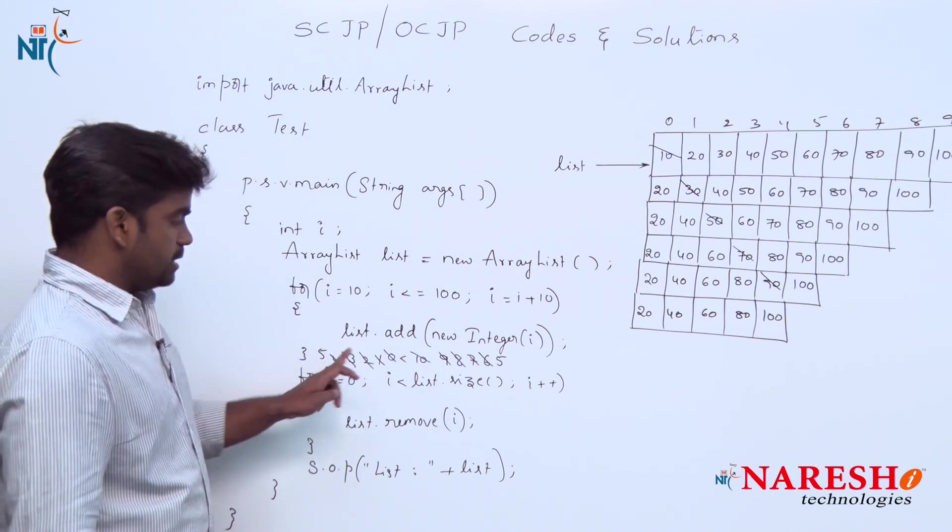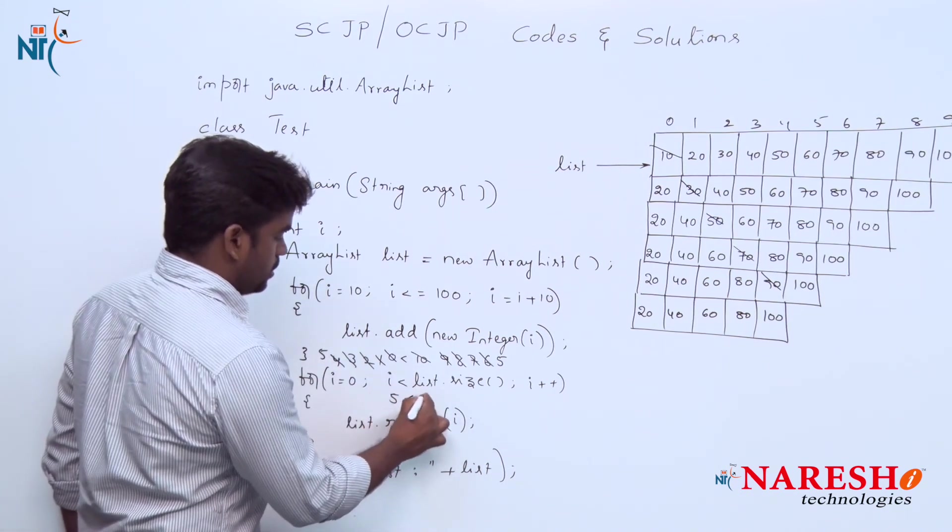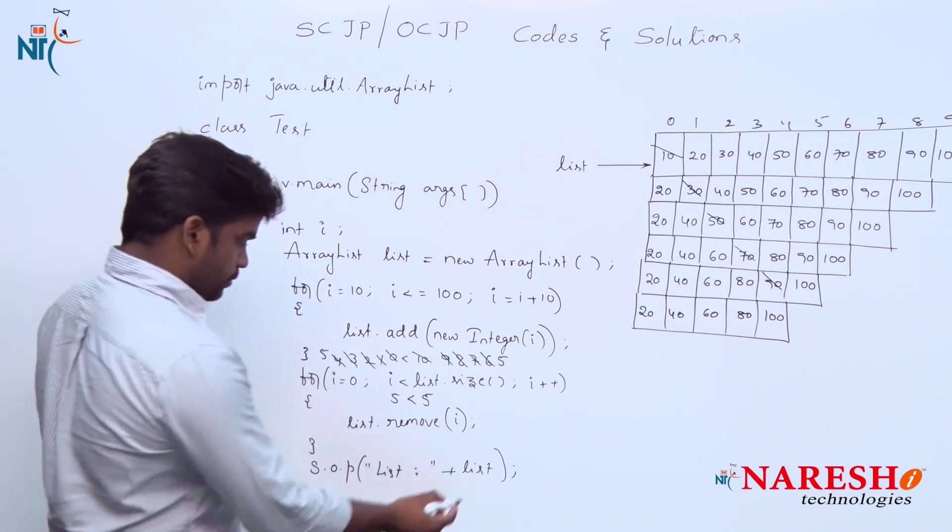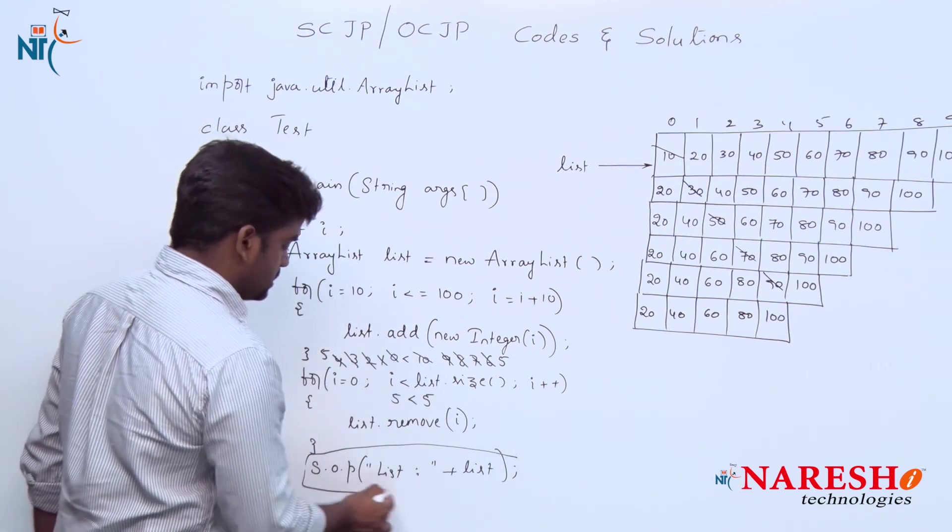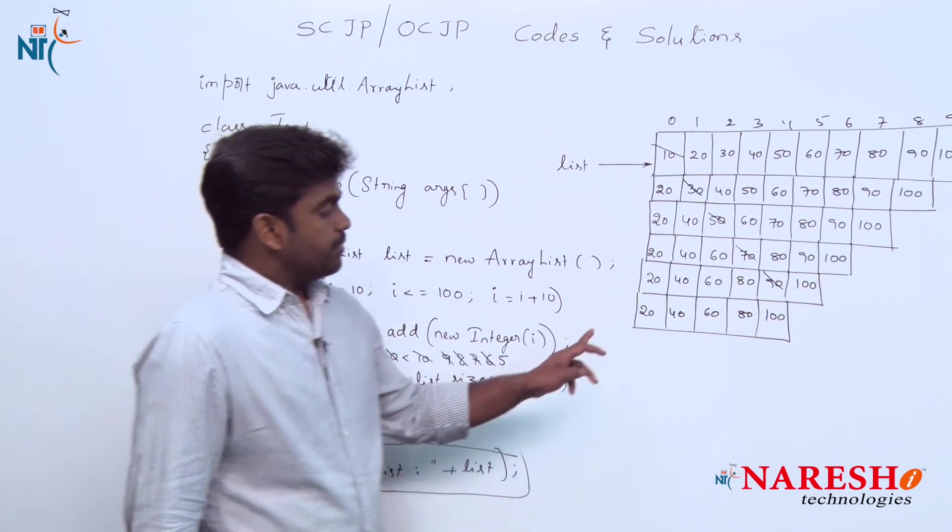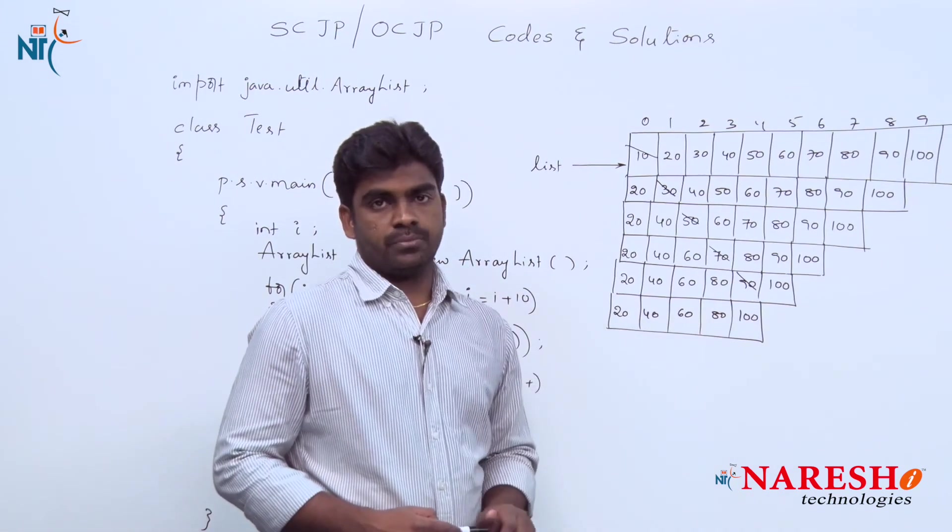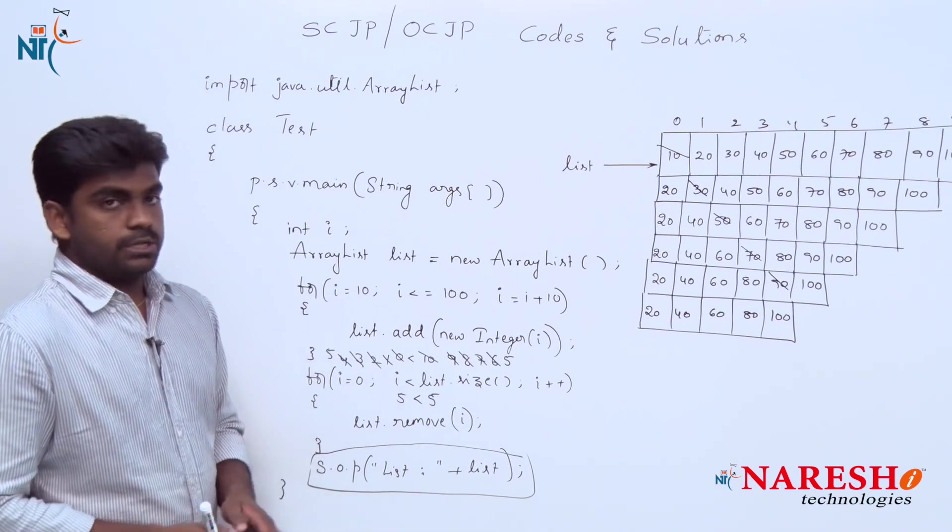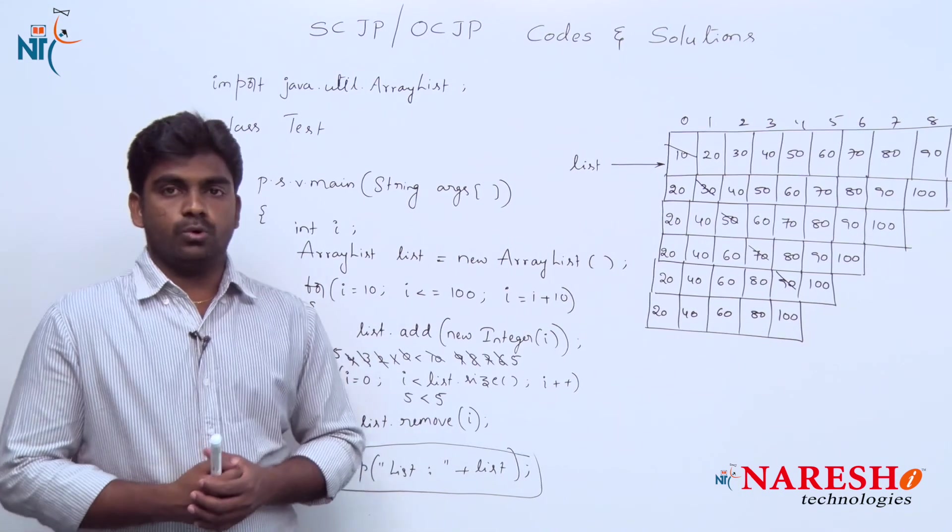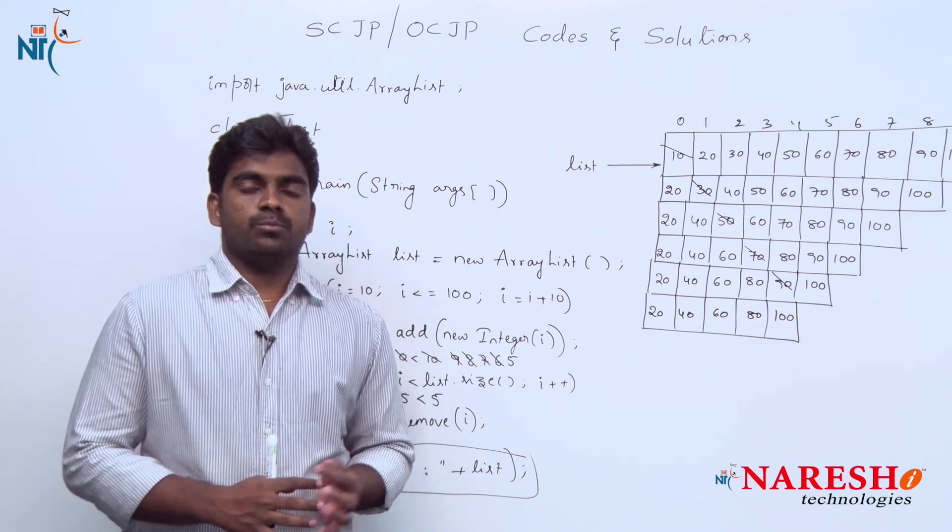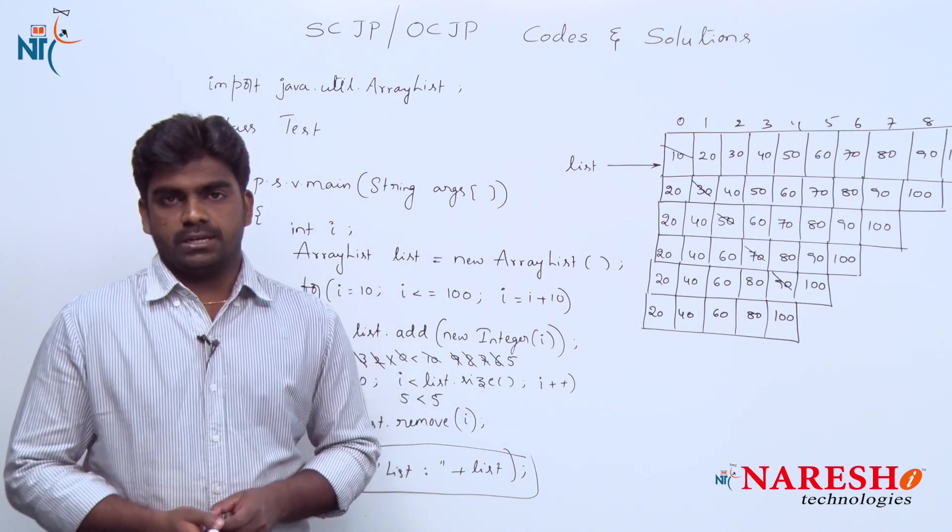5 is less than 5 is a condition false, so it will terminate. Whenever it is printing the final list in the application, the final list is 20, 40, 60, 80, 100. This is how the program executes and what is the solution of this code. Hope you understood. For more videos please subscribe to Naresh IT channel, thank you.